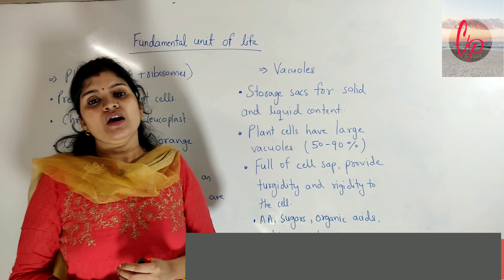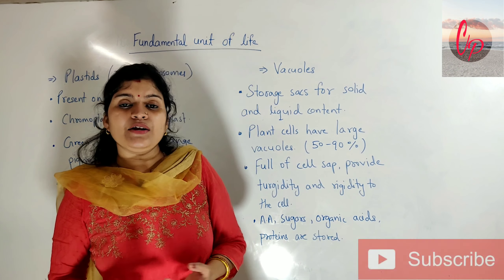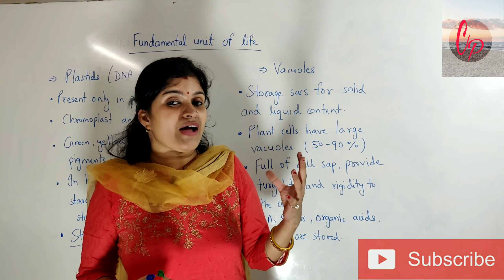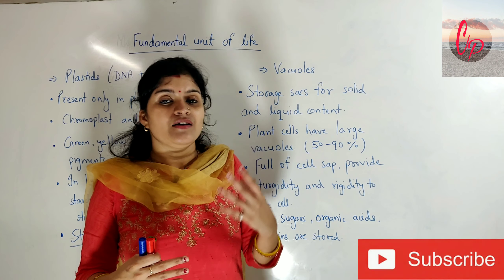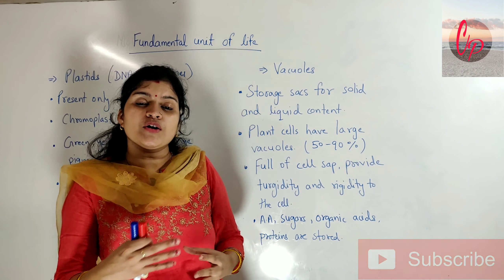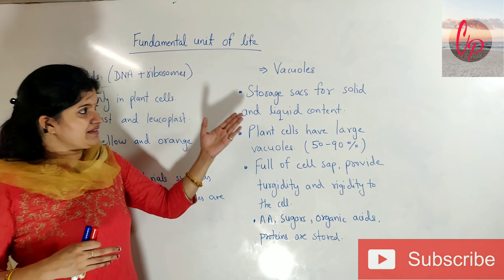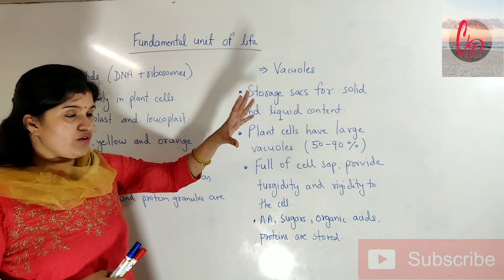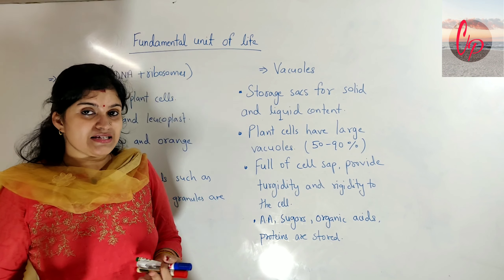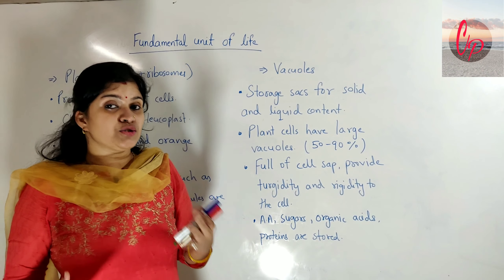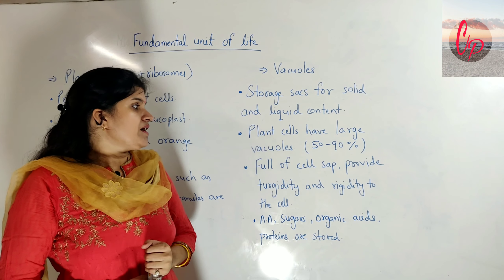Now let's move to the next cell organelle — vacuoles. As mentioned in an earlier video about the difference between plant and animal cells, vacuoles are large in plant cells while they are small in animal cells, occupying a very large space. The function of vacuoles is that they work as storage sacks for solid and liquid content, storing materials present inside the plant cell.